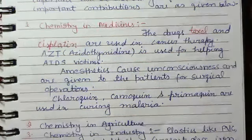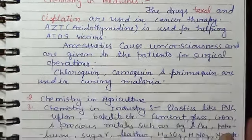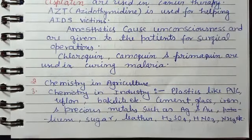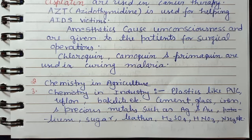Second, chemistry in agriculture. Chemistry has great use in agriculture. Chemical fertilizers such as urea, ammonia, sulfate, etc. are used to increase the production of crops and increase the soil's fertility. We add different fertilizers like urea, ammonia, sulfate, etc.